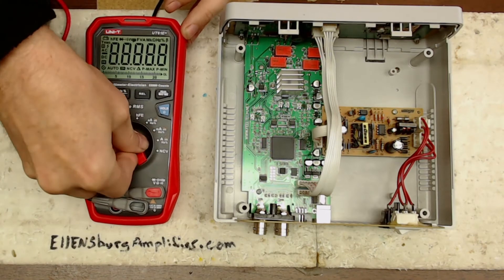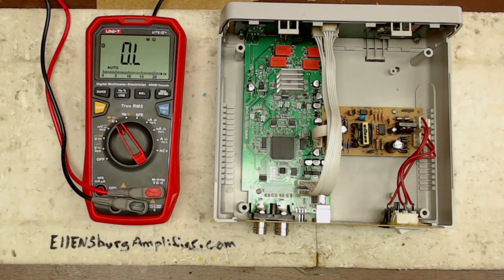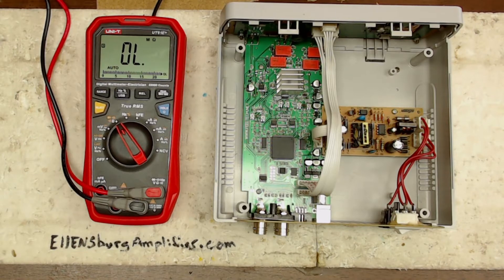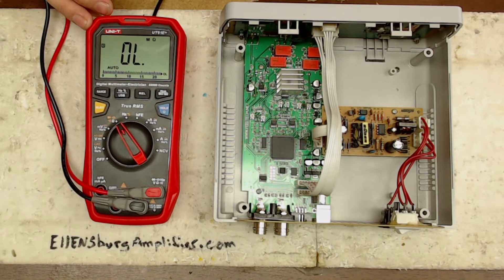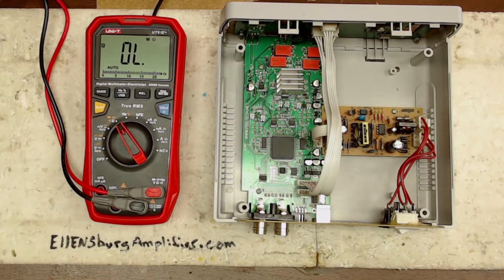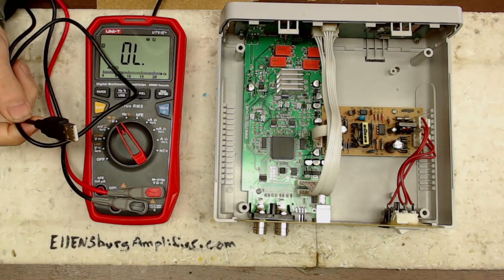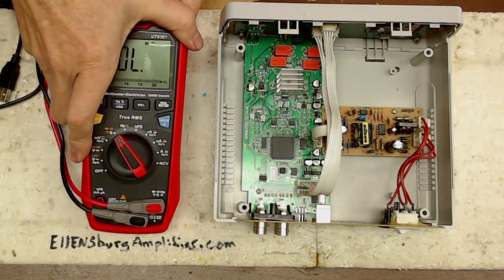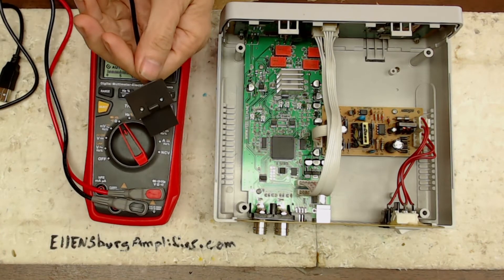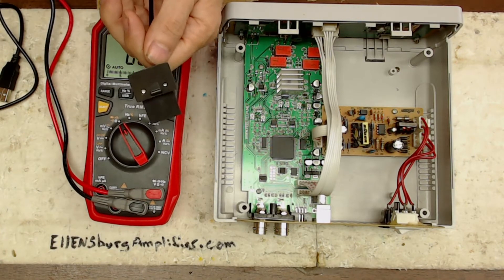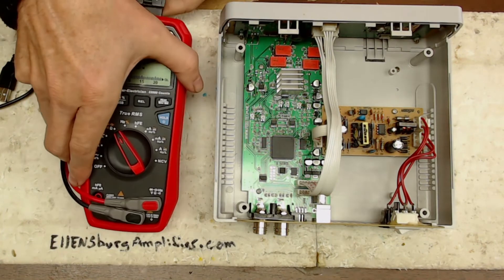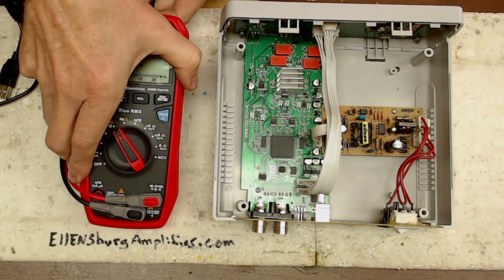So I'm going to turn on this Uni-T UT-61E meter here. And unfortunately I can't hook it up to the computer to show you guys on screen the readout of this. But if any of you guys have any ideas on how to make this work with Windows 10, please feel free to let me know or get a hold of me.